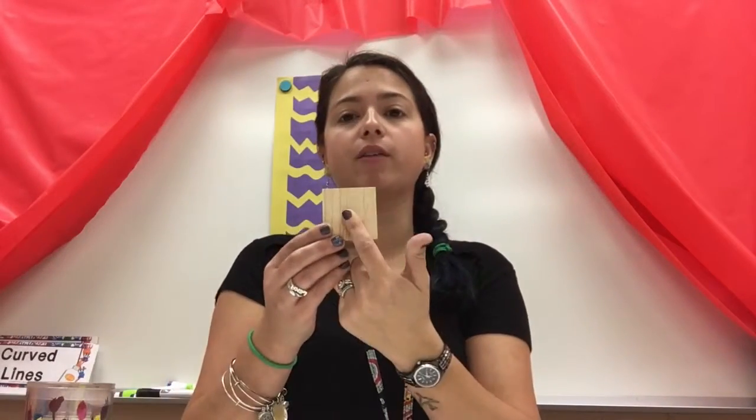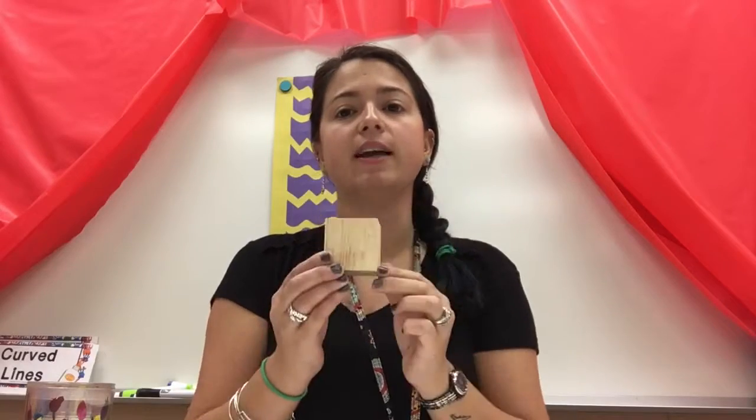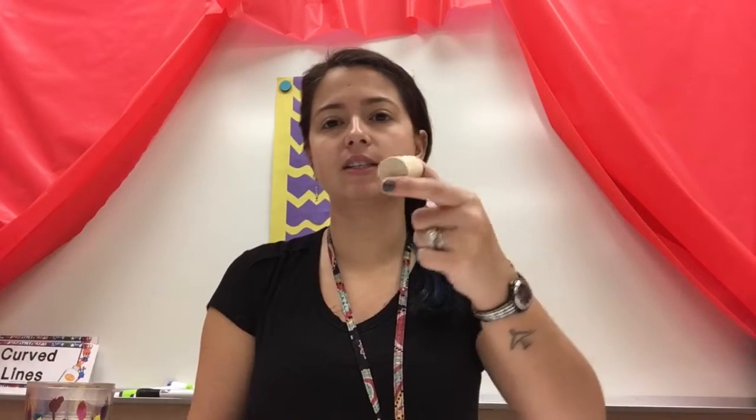For our forms, we're going to be drawing the front, the top, and the sides of your building. Two of the most common forms that you'll be using are some form of a cube or a rectangle and a cylinder.